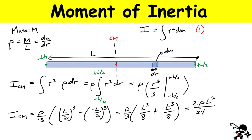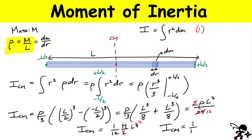One of those L factors cancels out, and we get the final result: the moment of inertia through the center of mass equals one-twelfth ML squared. Let me go ahead and box that one up. That is the first calculation I wanted to do.